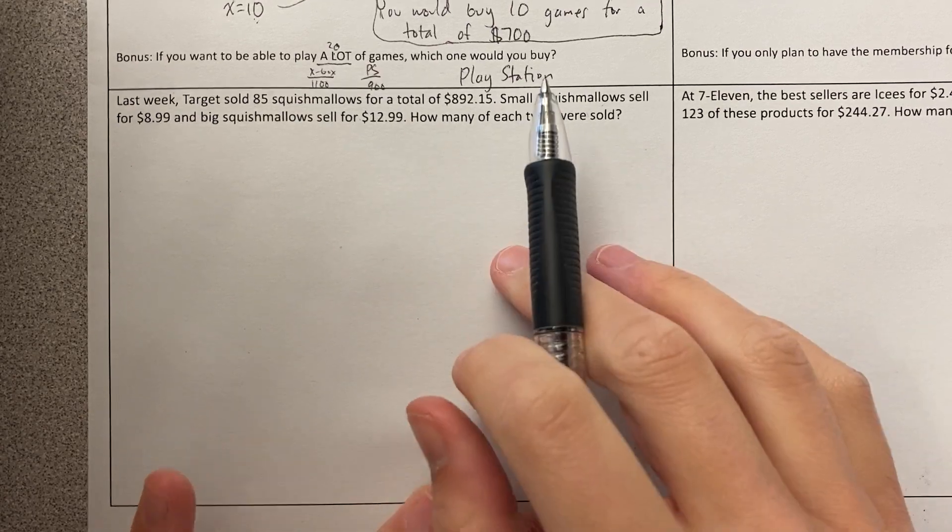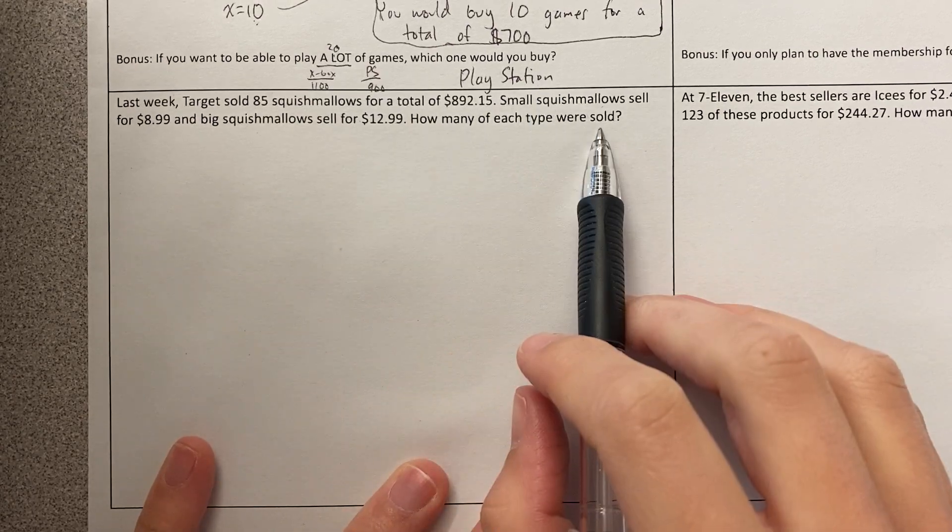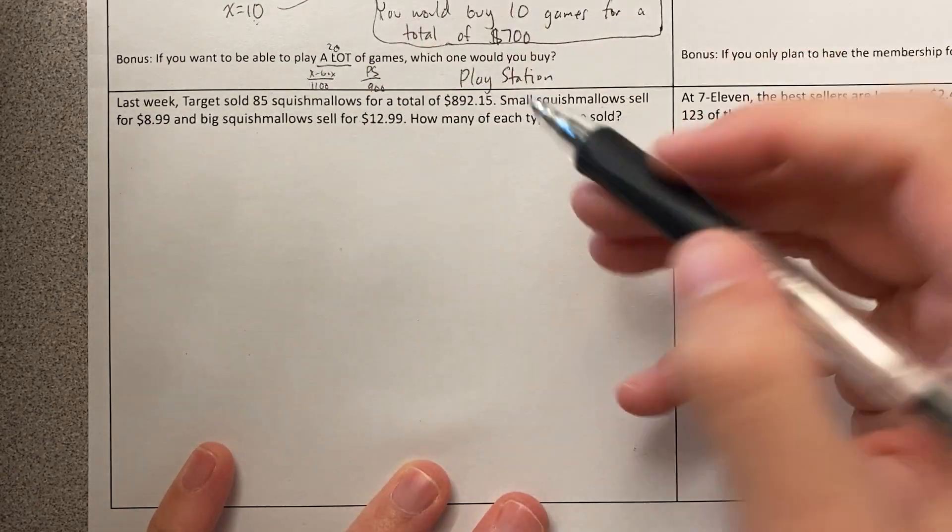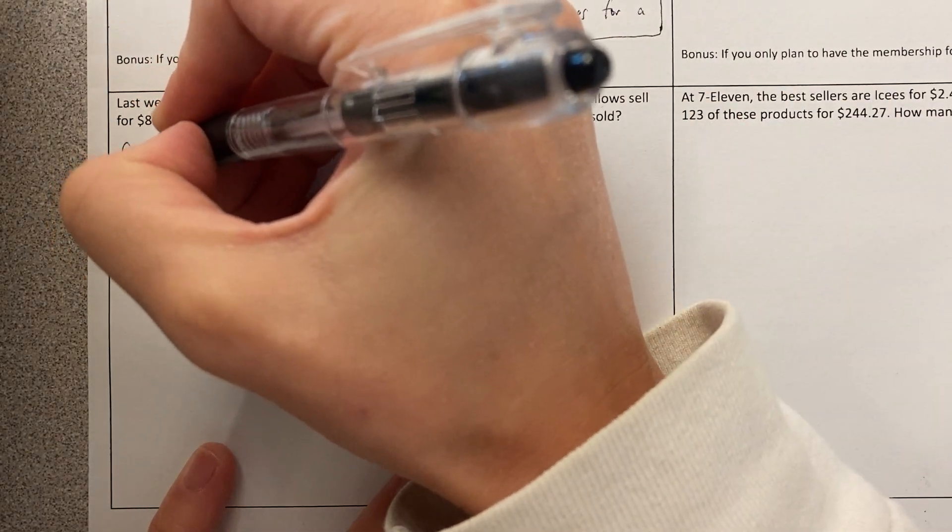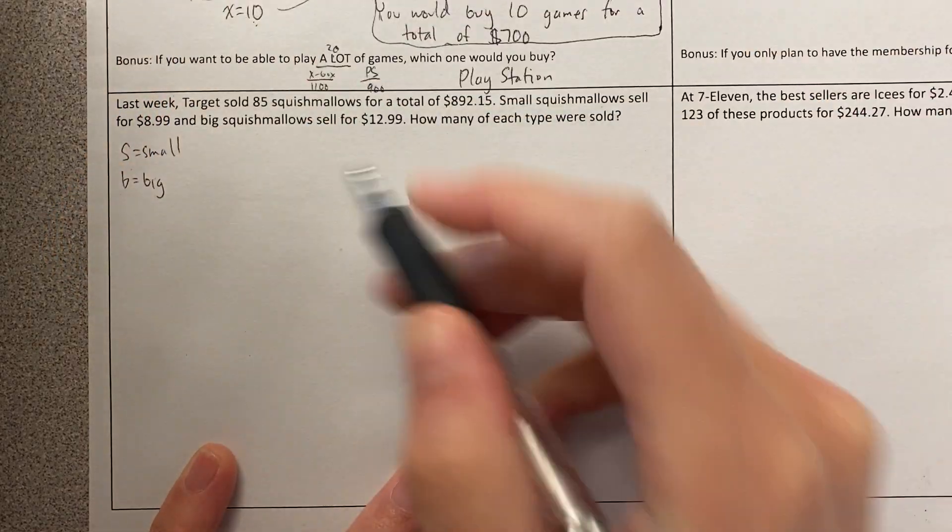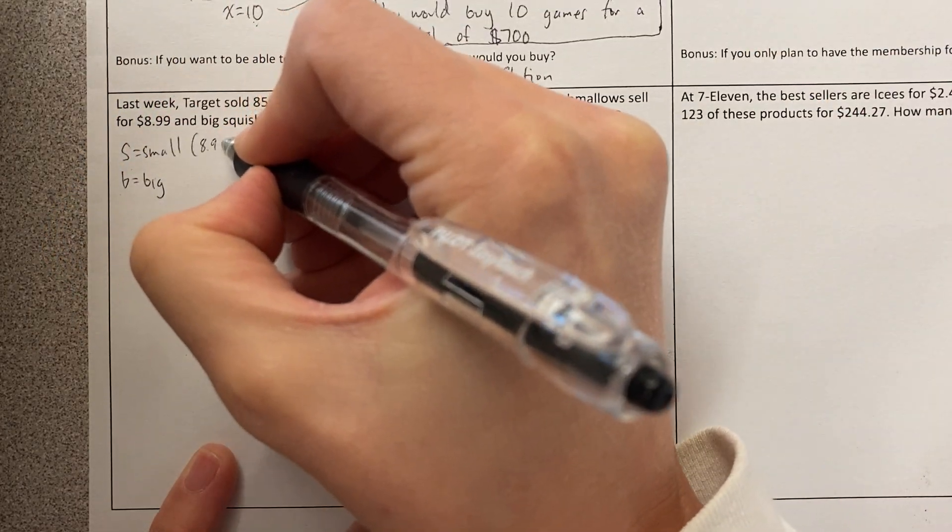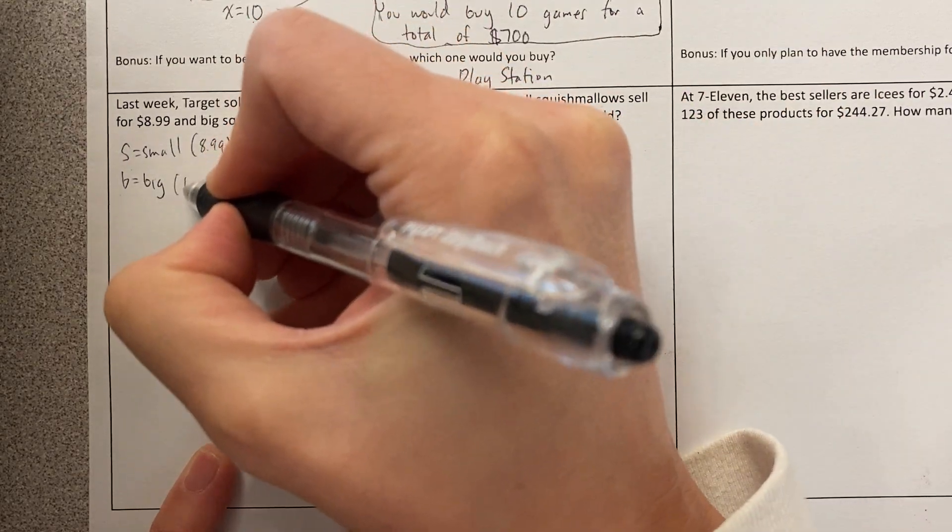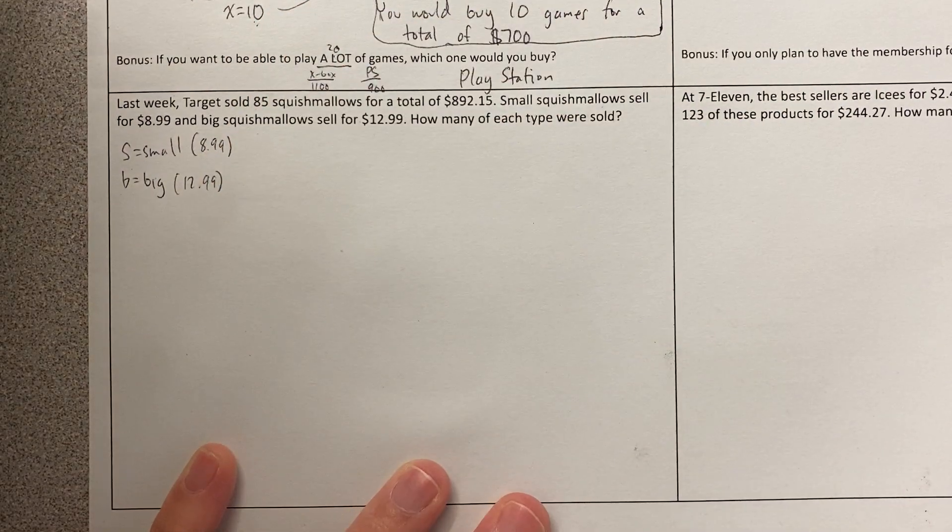Okay, so first we're defining our variables. We want to know how many of each type, that's our unknown. So we're going to say, let's do S for small and B for big. And we can even make ourselves little notes. The small ones are $8.99 a piece. The big ones are $12.99 a piece. We want to know how many of each.